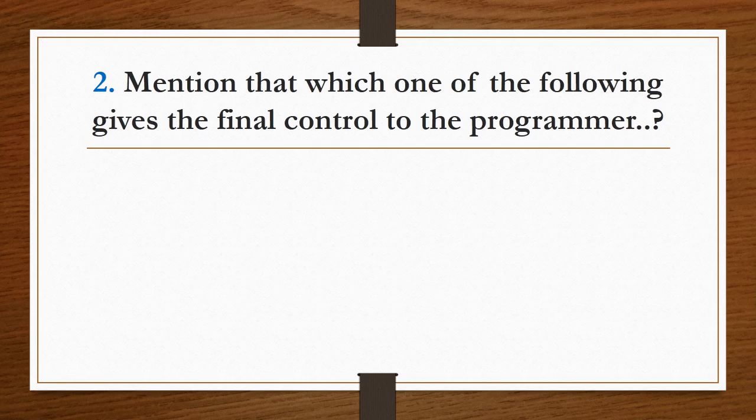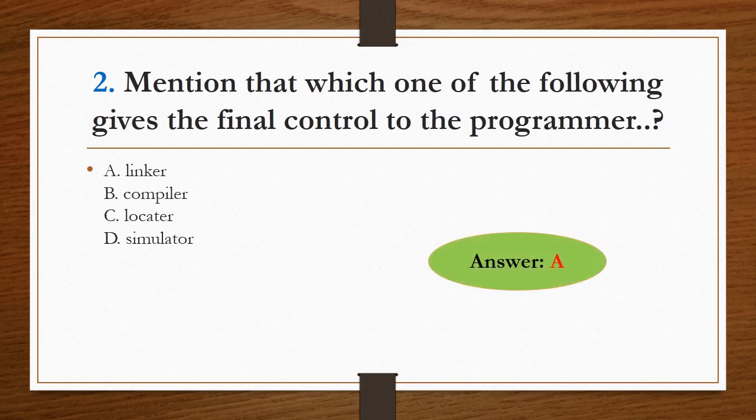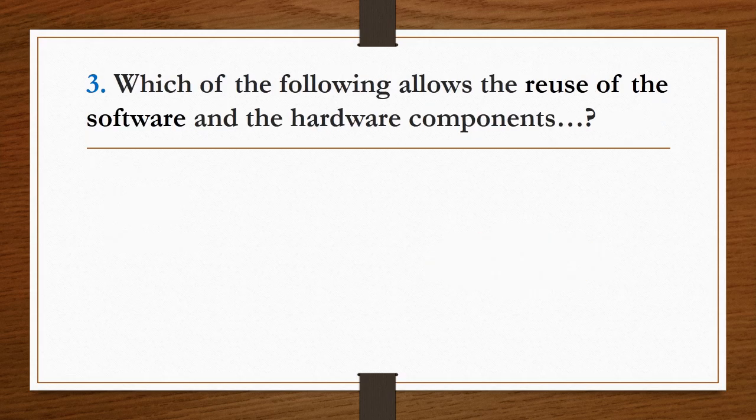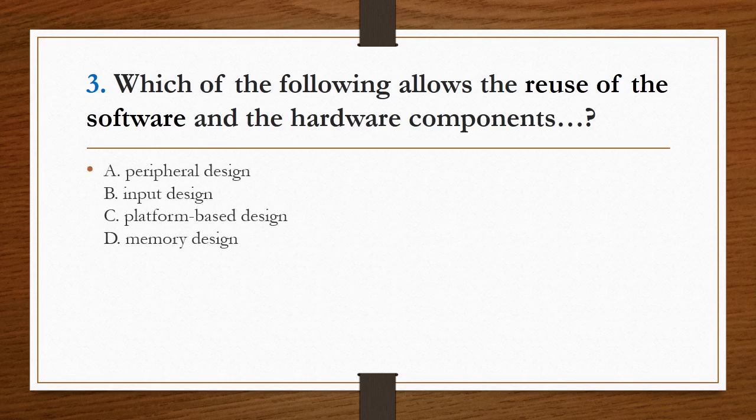Second question: which one of the following gives the final control to the programmer? Four options are given: linker, compiler, locator, and simulator. The answer is option A, linker.